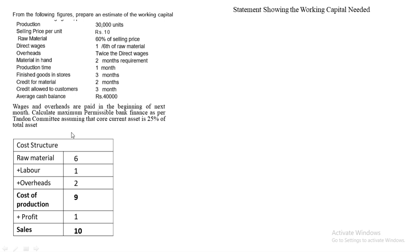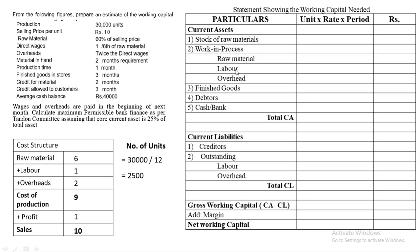For Working Note 2, number of units = Annual production ÷ 12 = 30,000 ÷ 12 = 2,500 units. Since the entire sum is on a monthly basis, 2,500 units will be used throughout. Rate comes from the cost structure, and period is taken from the question.